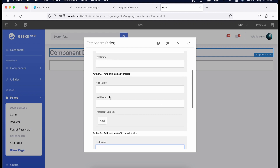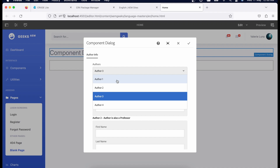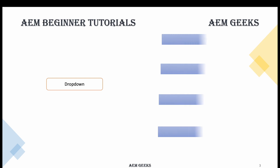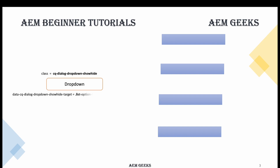To show and hide these containers based on the dropdown change event, we'll add some classes and data elements to these fields. For the dropdown, I'll add a class and a data element called data-cq-dialog-dropdown-show-hide-target, with a value like .list-option — whatever you want to add. These two things are added to the dropdown. You need to memorize this specific pattern as you'll use it throughout your event handlers in dialogs.